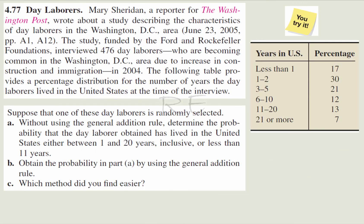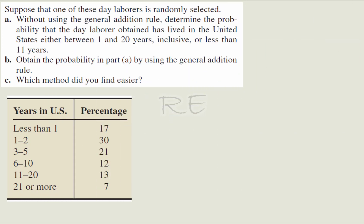The following table depicts the number of years the day laborers lived in the United States before the time of the interview. These are people who work in construction. If one laborer is picked randomly, we're going to determine without using the General Addition Rule the probability that it has lived in the United States either between 1 and 20 years inclusive or less than 11 years.